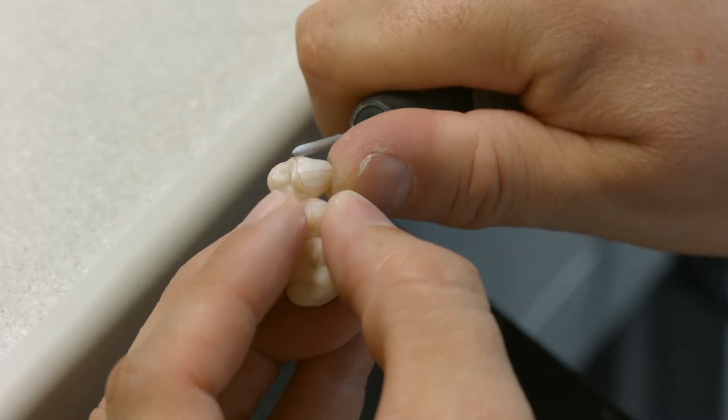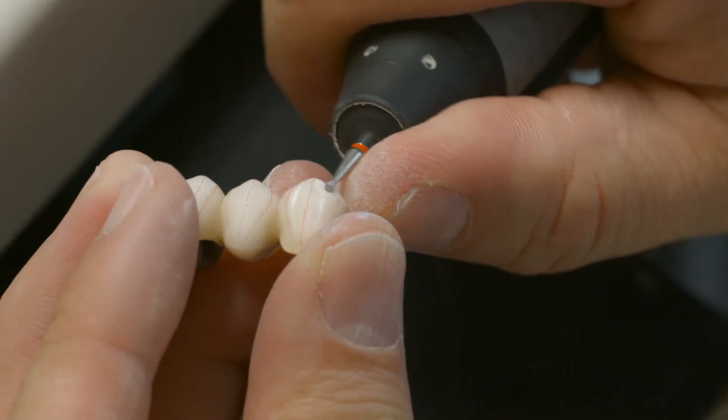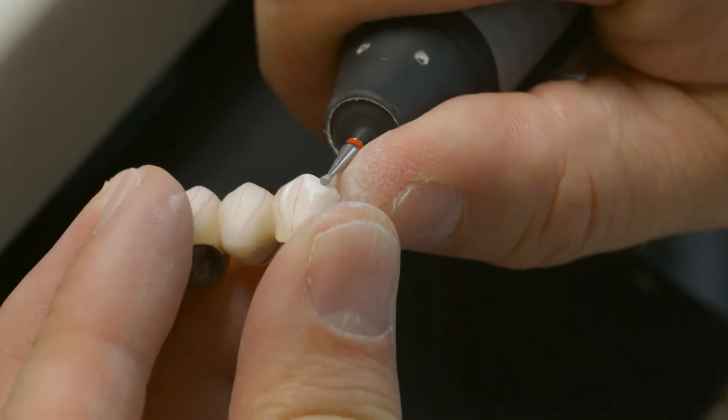Use diamond burs to give the restoration a true-to-nature shape and surface texture and faithfully reproduce growth lines and convex and concave areas.